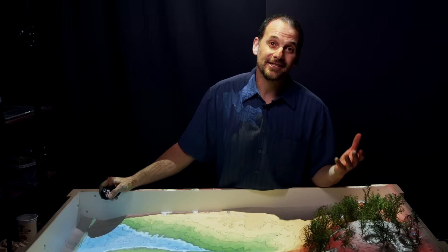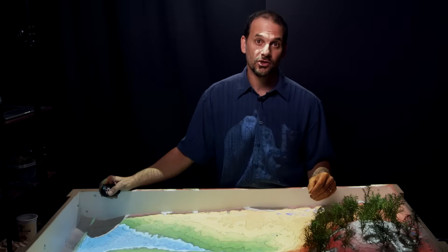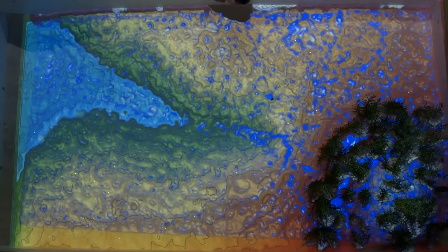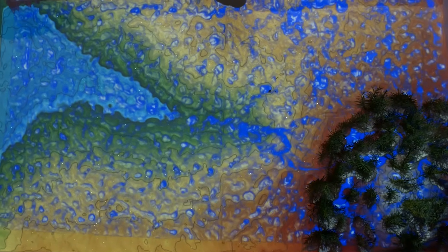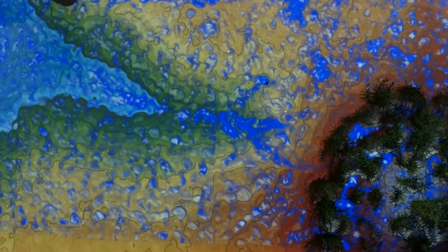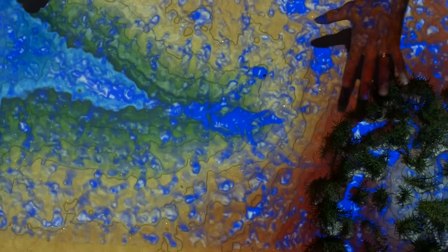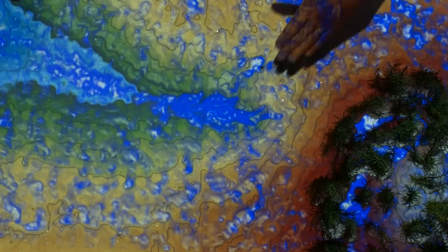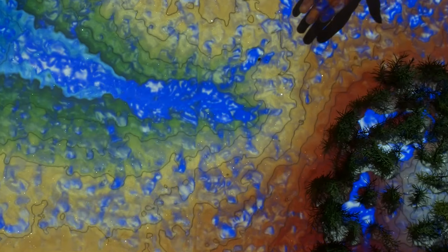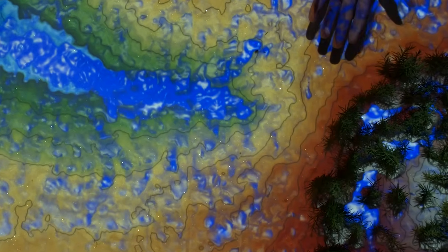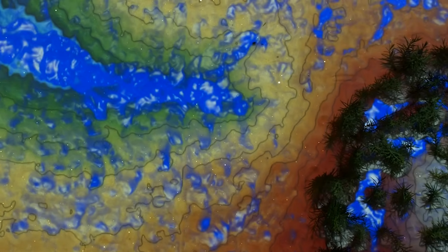So a forest acts like a giant sponge, soaking up water into the bodies of trees and plants and into spongy forest soil. That sponge soaks up rain and then slowly releases it down into the rest of the watershed, feeding creeks and streams below.